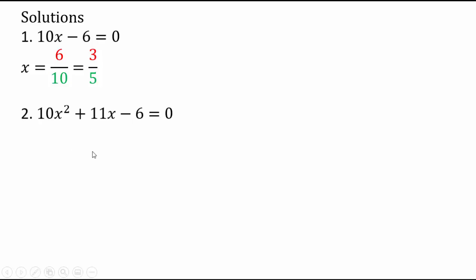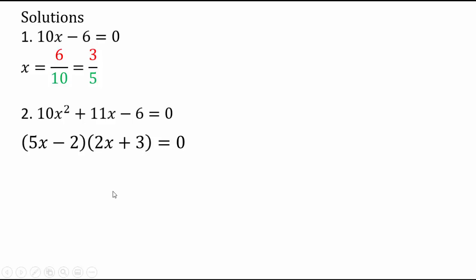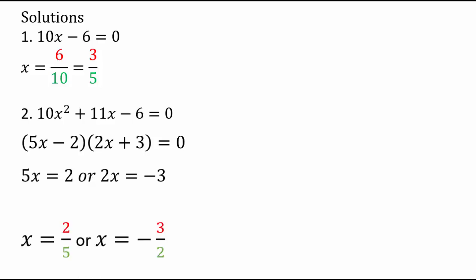For 10x squared plus 11x minus 6 equals 0, you can either use the quadratic formula or factor. If you factor, it looks like 5x minus 2 times 2x plus 3 equals 0. When you solve, you get 5x equals 2 or 2x equals negative 3, giving x equals 2 fifths or x equals negative 3 halves.